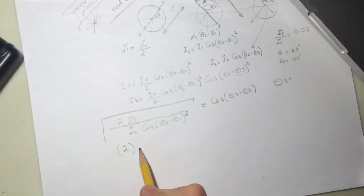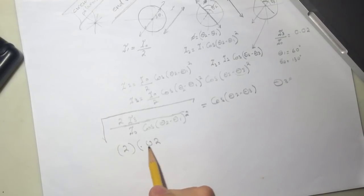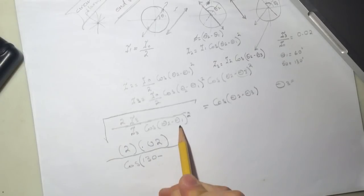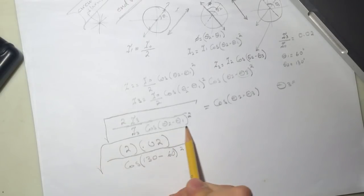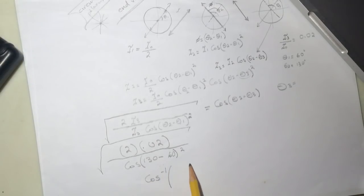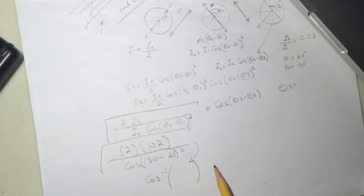2 times 0.02, that is the ratio, divided by the cosine of 130 minus theta 1. Theta 1 was 60 squared. Take the square root, then after that take the cosine inverse of your answer from this guy. Plug it in here and then the answer you get from this, it's going to be equal to theta 2 minus theta 3.